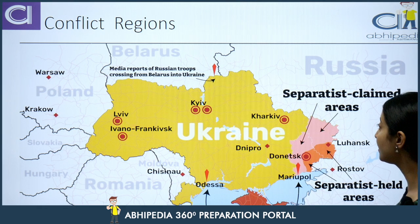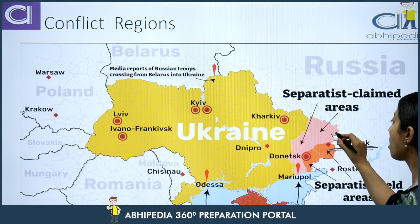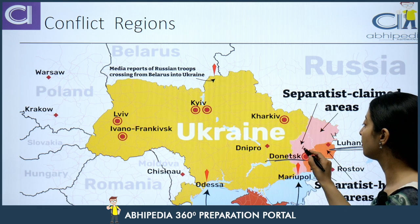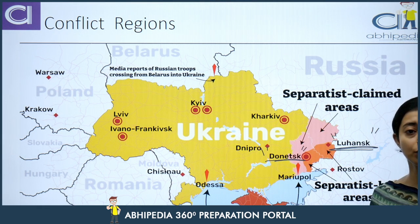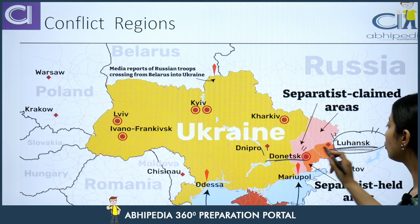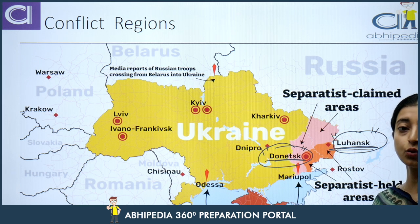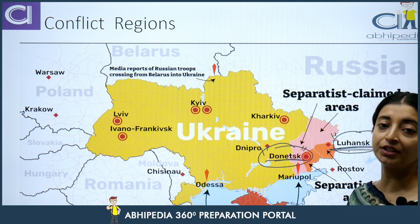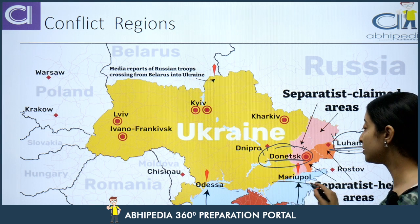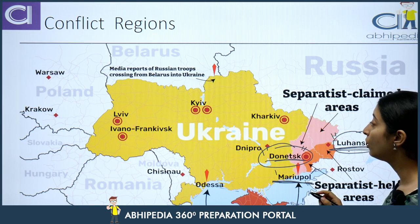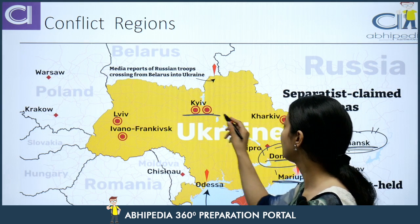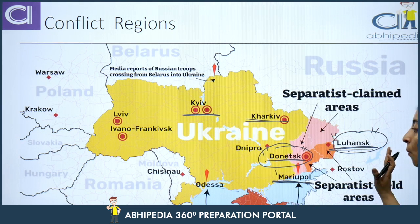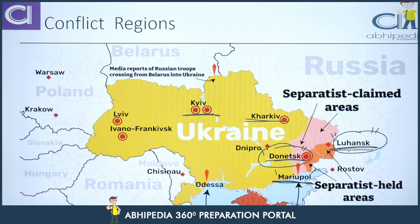The conflict regions you've often seen in the news are Luhansk and Donetsk. At the beginning of the conflict, Russia recognized the independent status of both these states, which led to more aggravated conflict. The region of Mariupol has also been very much in the news, as have Kharkiv and other regions. It is useful to know their north-south-east-west positions.